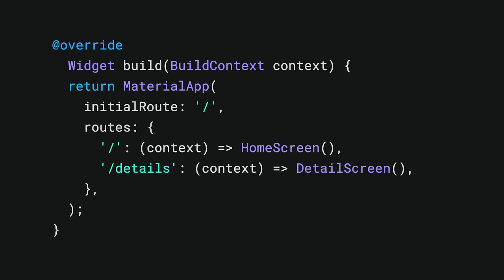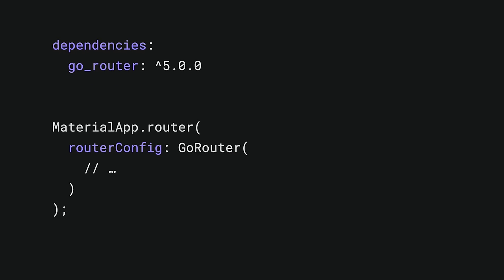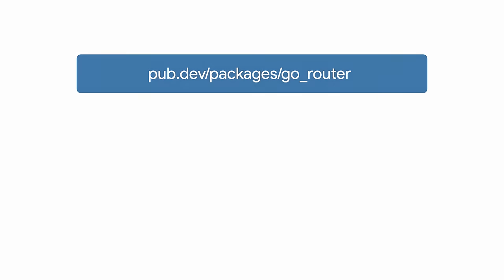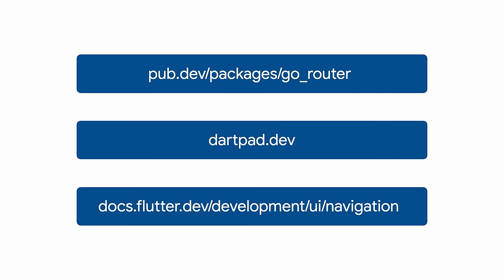For this, Flutter provides the Router, which helps make sure that deep links are handled consistently, regardless of the current location the app is showing. You can find packages on pub.dev that help you configure deep links with a single configuration object, for example, the GoRouter package. For more information on GoRouter, go to pub.dev or try the sample in the DartPad samples dropdown. For more details on how to set up your app, visit the navigation and routing page on flutter.dev.